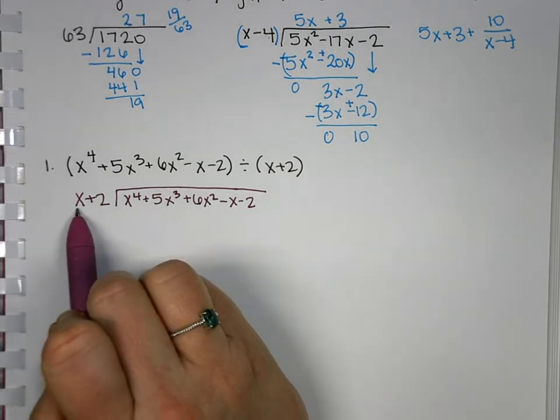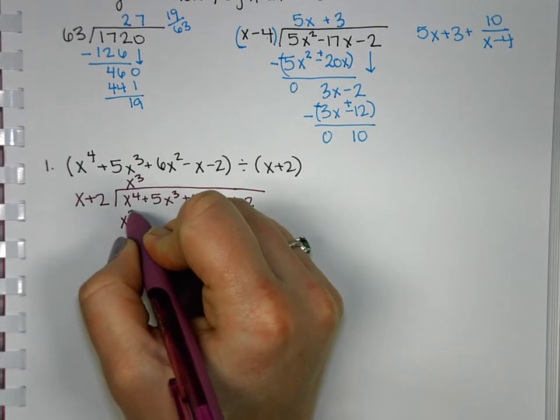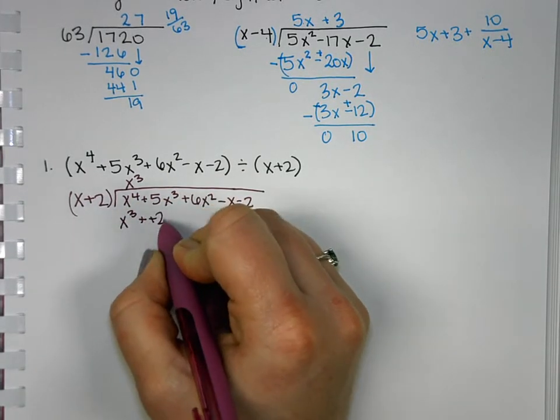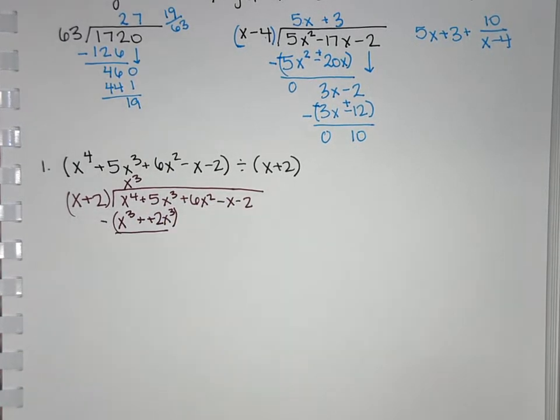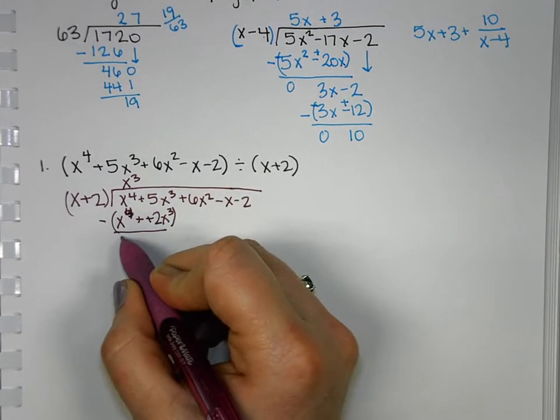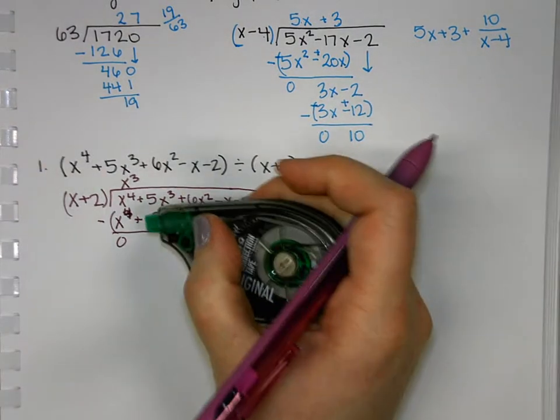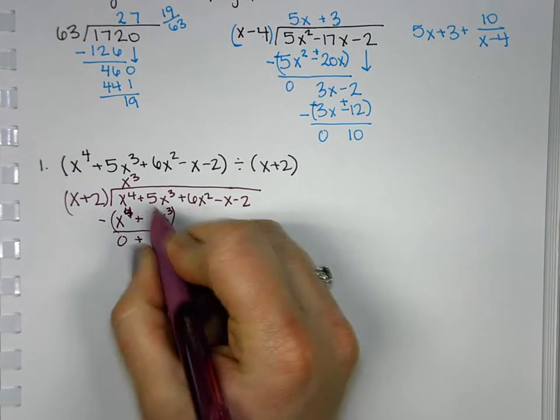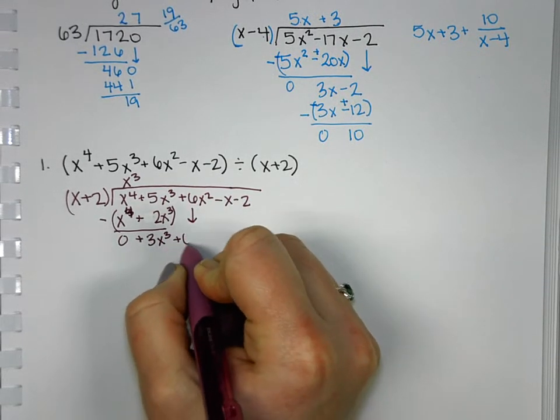So what do we multiply x by to get x to the 4th? x to the 3rd. And then we'll multiply x to the 3rd by everything out here. And then we have to subtract, so don't forget to distribute the negative. So these will cancel out. 5 minus 2, after distributing the negative, it'll become a minus. We'll get 3x to the 3rd. Bring down the 6x squared.